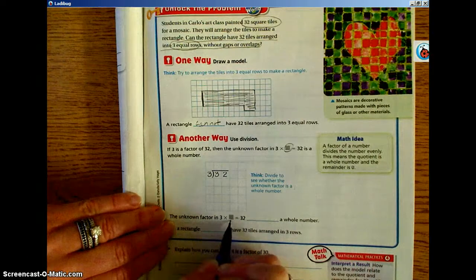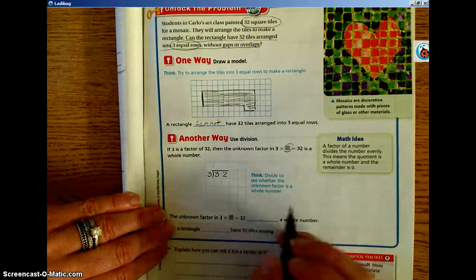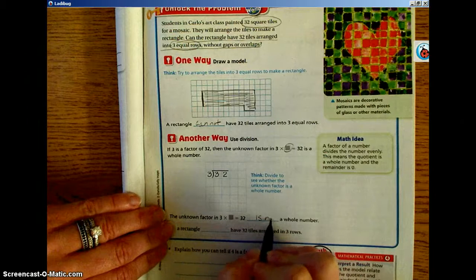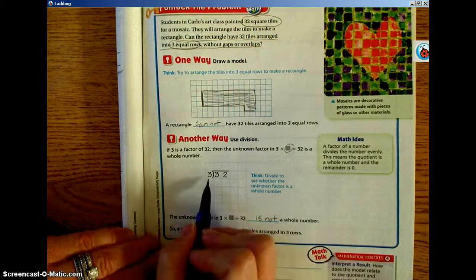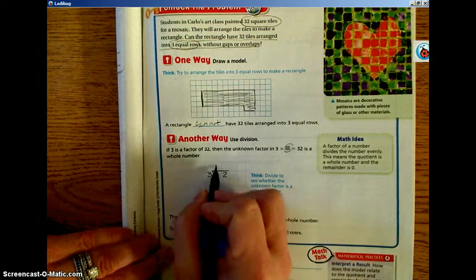Now we're actually going into the math part and want to divide to see whether the unknown factor is a whole number. So the unknown factor in 3 times whatever equals 32 is not a whole number. Because we know, in solving this problem, 3 goes into 3 one time.